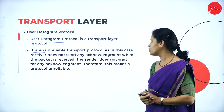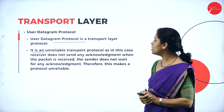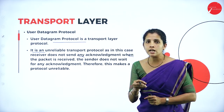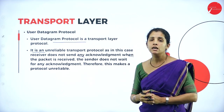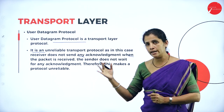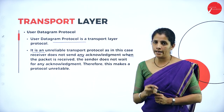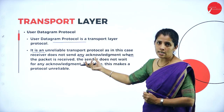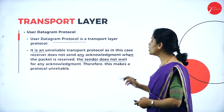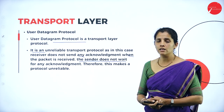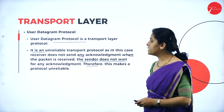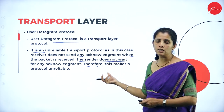UDP is unreliable because the receiver does not send any acknowledgement when a packet is received. In TCP, the receiver sends an acknowledgement to the sender each time a packet is received. But in UDP, the receiver does not send acknowledgements, so the sender does not wait and continues sending data — this makes the protocol unreliable.